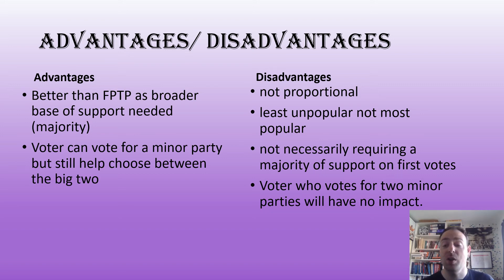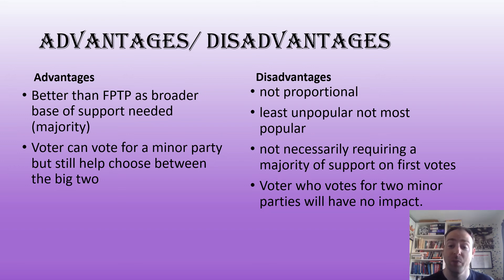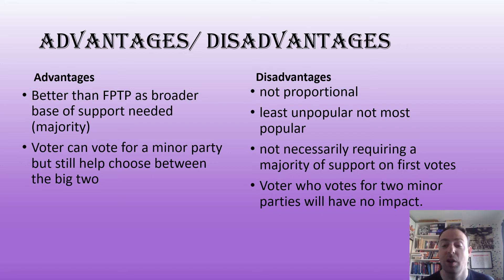Disadvantages of the Supplementary Vote: it's not directly proportional. It tends to lead to the least unpopular candidate winning rather than necessarily the most popular. A voter who votes for two minor parties — if both finish outside the top two — will still have no impact on the final result between the top two candidates.